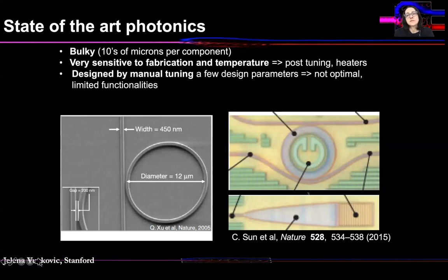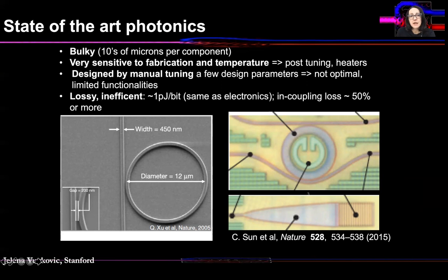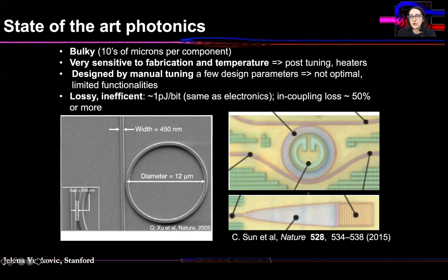Moreover, photonics is designed by manual tuning of few design parameters or by using photonic components from a library already provided. That leads to suboptimal designs and limited functionalities. As a result, a lot of photonic components are lossy and inefficient. For example, in optical interconnect systems, we often have to deal with energy consumption of a picojoule per bit, which is comparable to state-of-the-art electronics. Moreover, losses are quite large — even in commercial systems, losses are often on the order of 50% or more for in-coupling of a signal to the circuit.